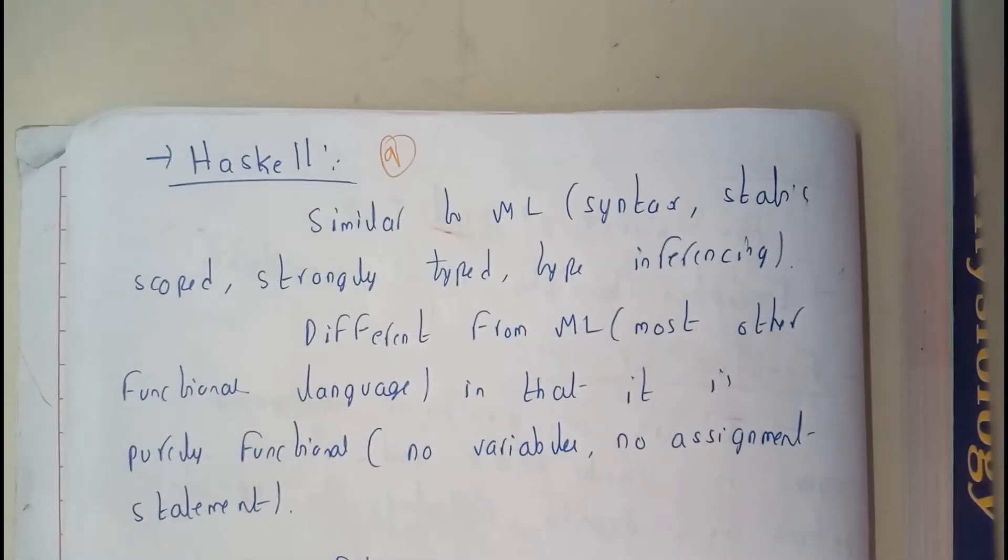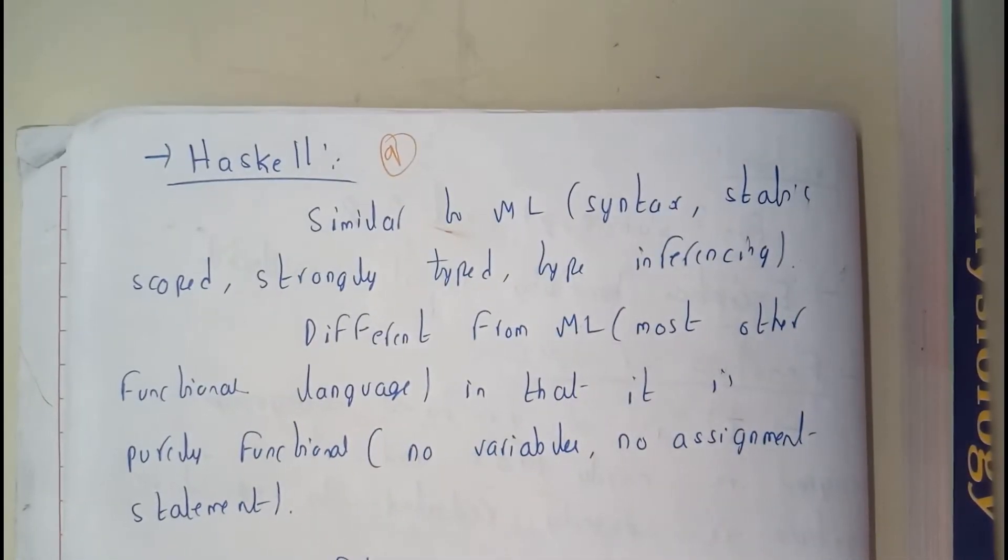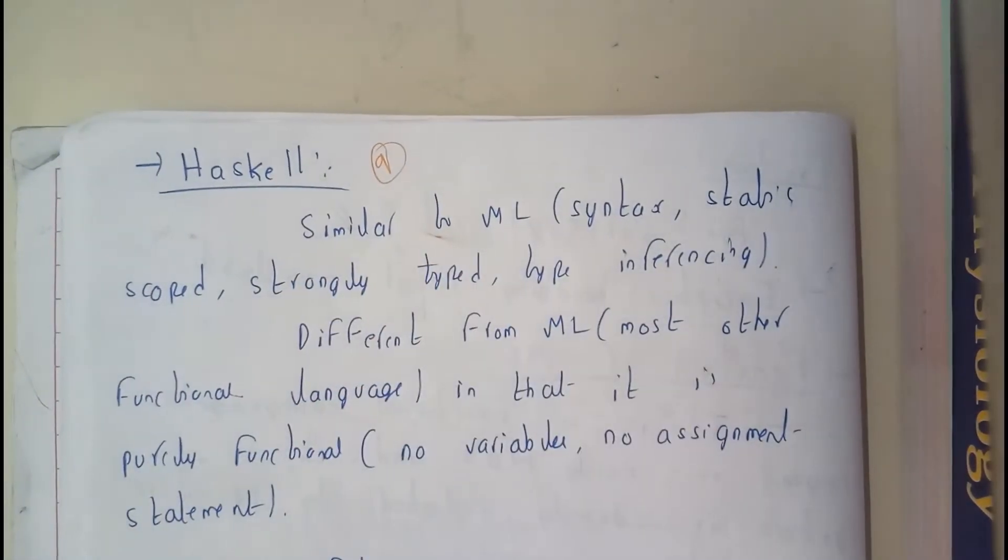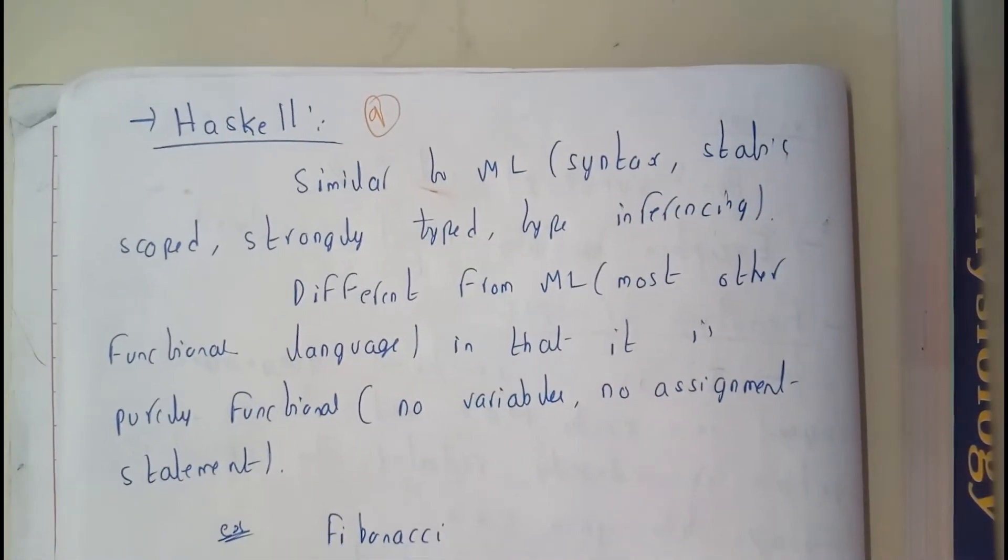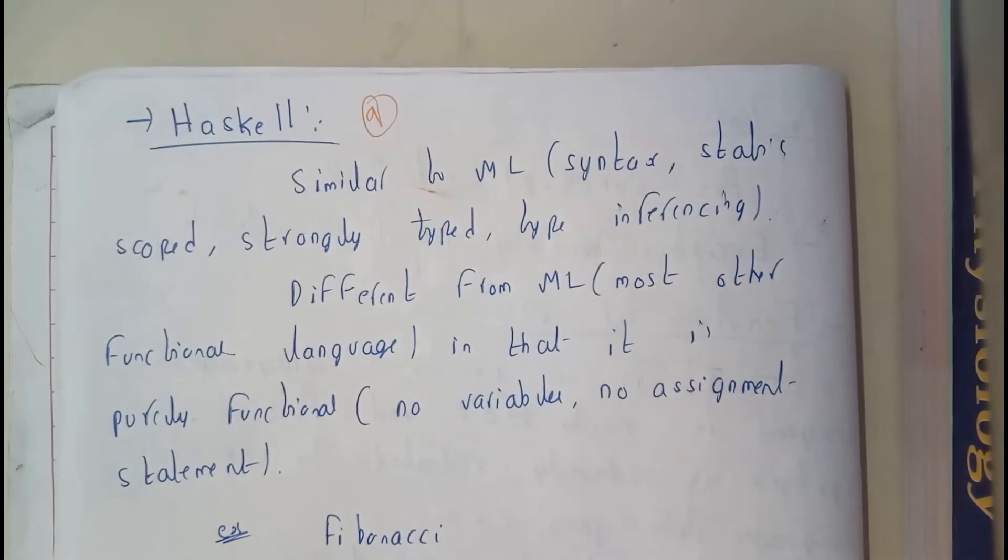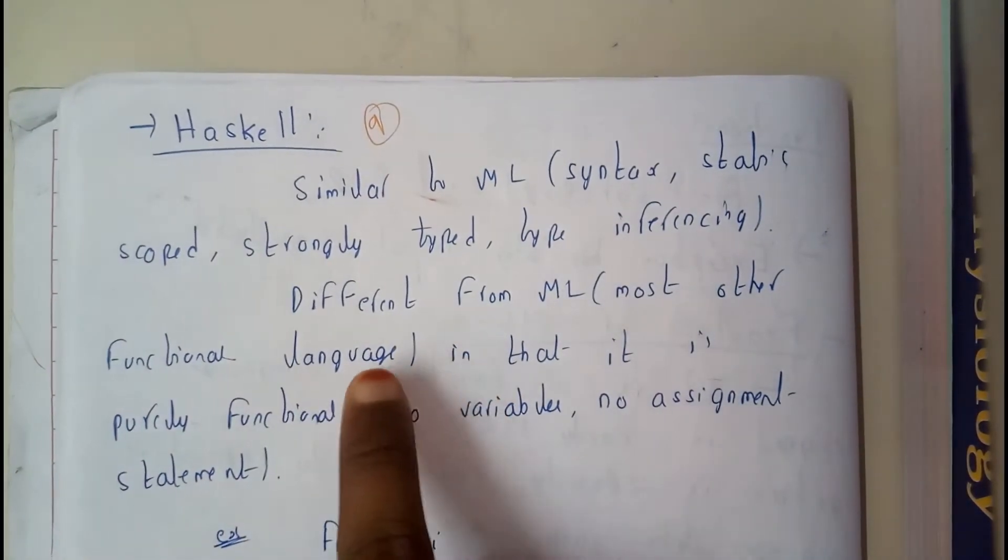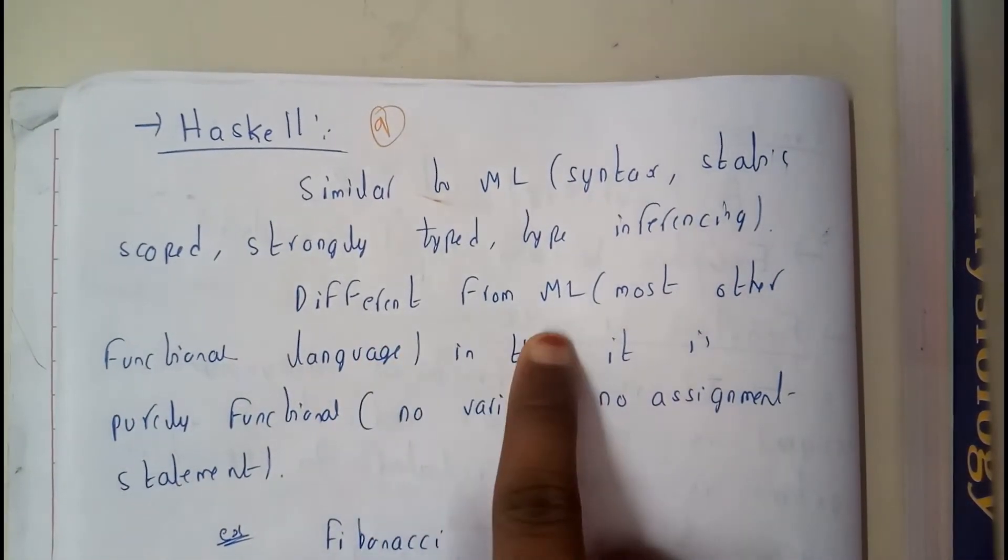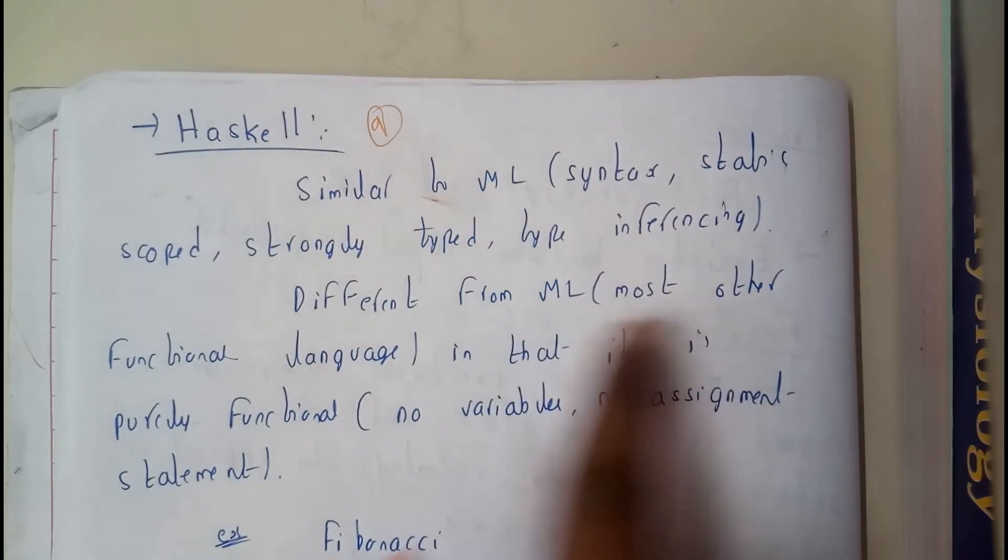So now let us go through it. Similarly to ML, syntax, statical scope, strong type, type inferencing - everything is available in Haskell also. The main difference from ML and most other languages...